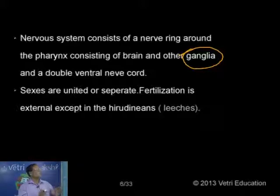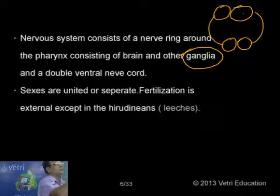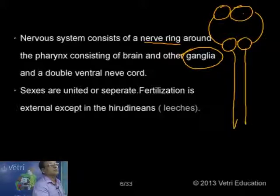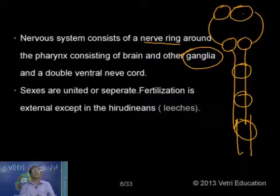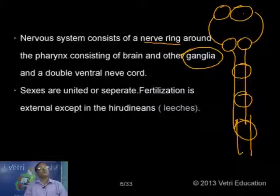From the nerve ring arises a double ventral nerve cord running through the body, and in each segment we have segmental ganglia. This is the general nervous system in the case of Annelida: a brain formed of two ganglia above the pharynx, ganglia below the pharynx connected by the circumpharyngeal connective forming the nerve ring, and from that arises a pair of ventral nerve cord — a characteristic of invertebrates — with segmental ganglia in each segment.